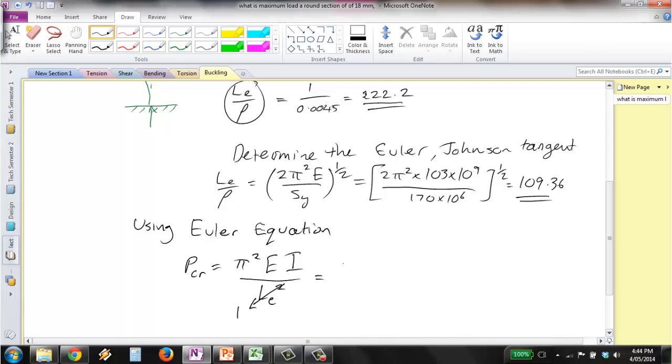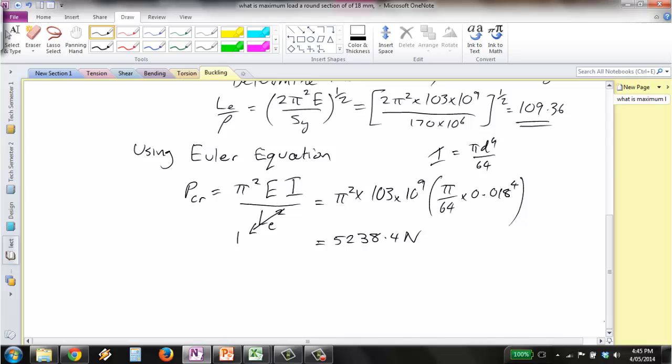We get π² times 103 times 10⁹ times π over 64 times 0.018 to the 4th, since our I equals πD⁴ over 64. This gives us a critical load of 5238.4 Newtons.